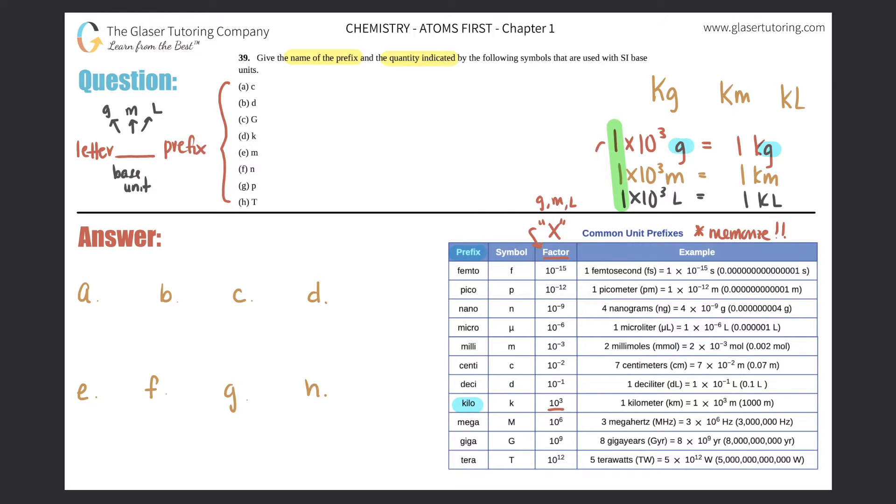You don't have to put the one in front because one times anything is the same exact number. All of these are just equal to a thousand, so you could say a thousand grams equals one kilogram—they all mean exactly the same thing.